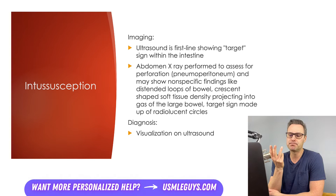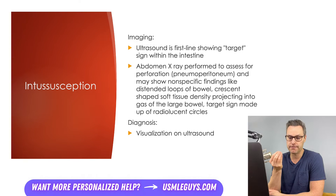The second imaging modality is the abdominal x-ray, primarily performed to assess for perforation. Pneumoperitoneum can be seen with perforation, caused by the presence of air under the diaphragm. There are also nonspecific findings on x-ray, like distended loops of bowel or a crescent-shaped soft tissue mass, which represents the intussusception itself.